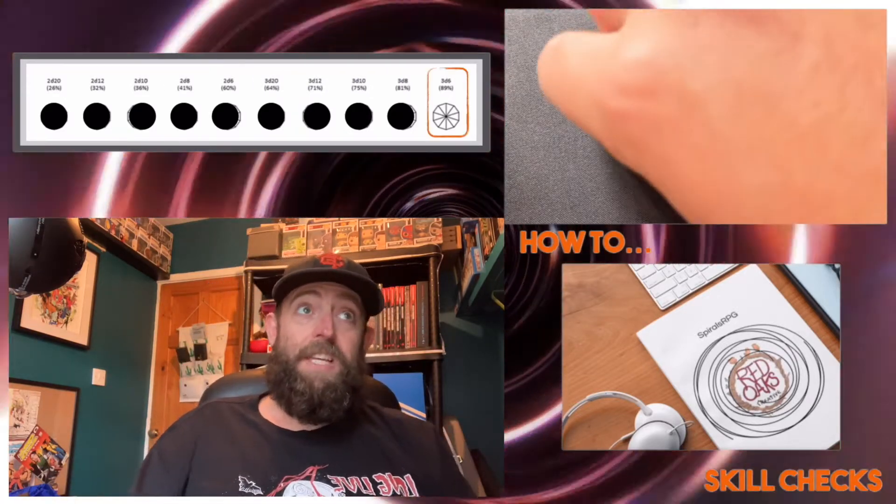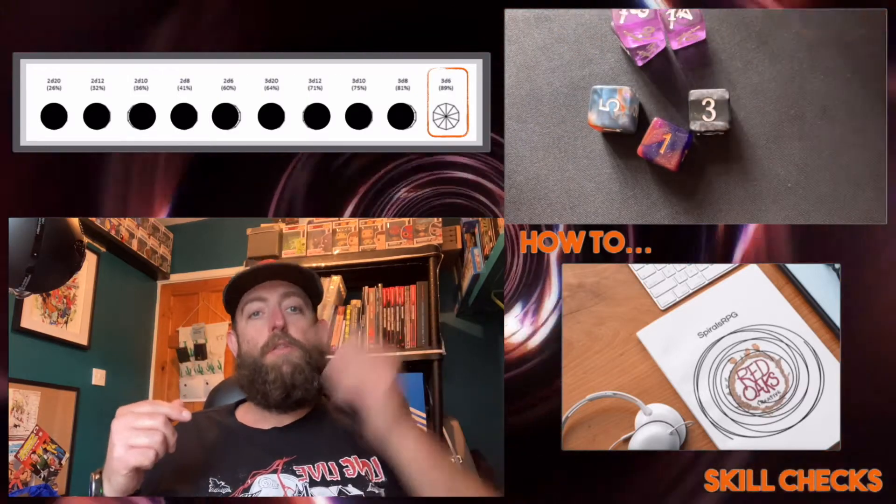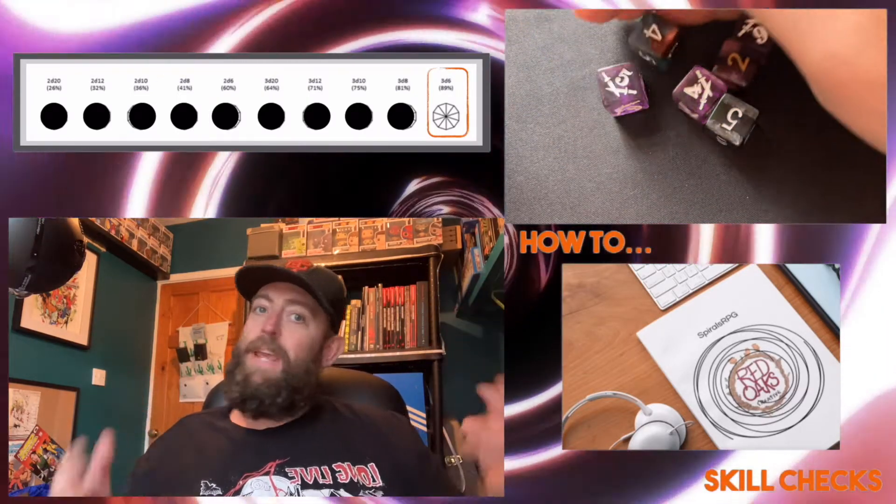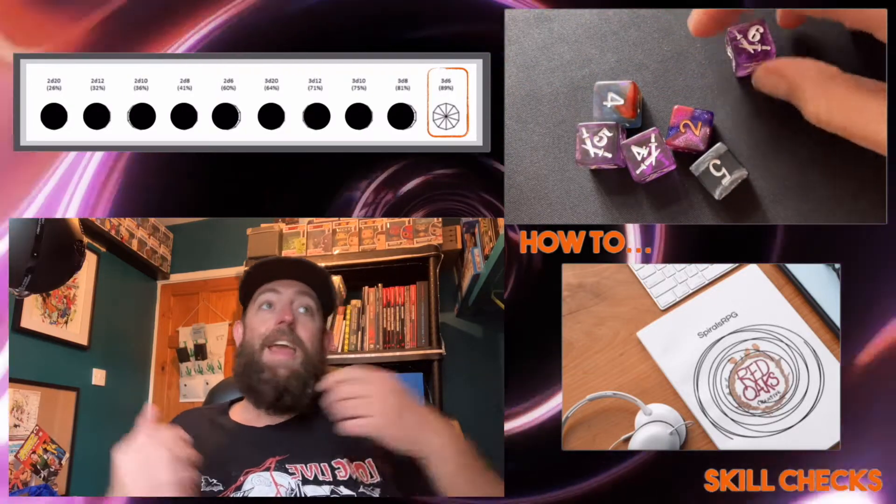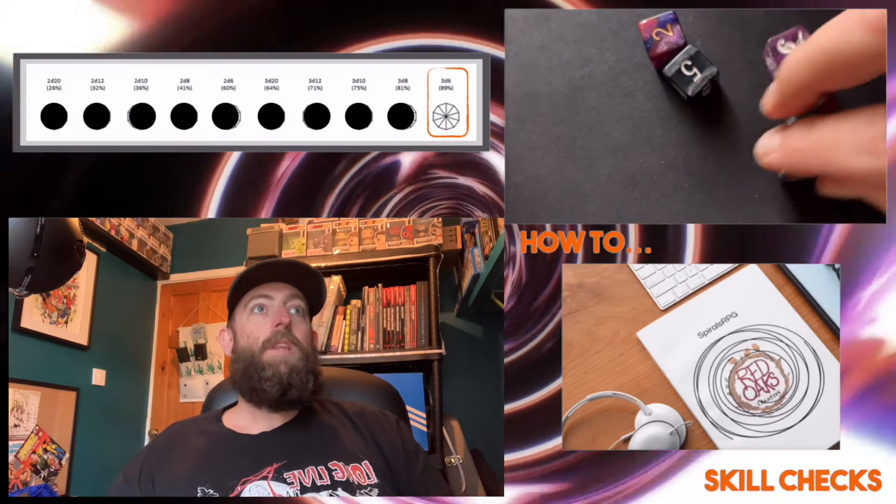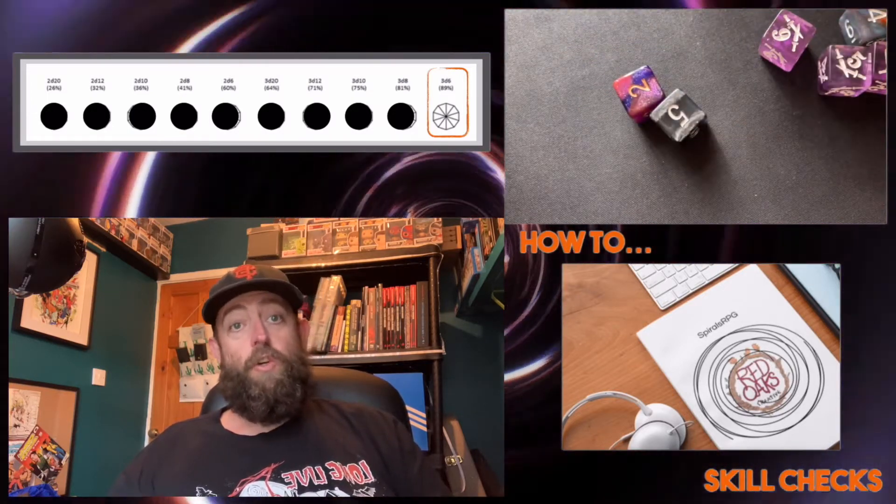The best dice pool you can possibly get in this game is when you're rolling 3d6 plus your three key dice, for a total of 6d6. This is your big chance to get 7s. Here, I roll my 6d6 and because the dice hate me, I only manage one solitary success.